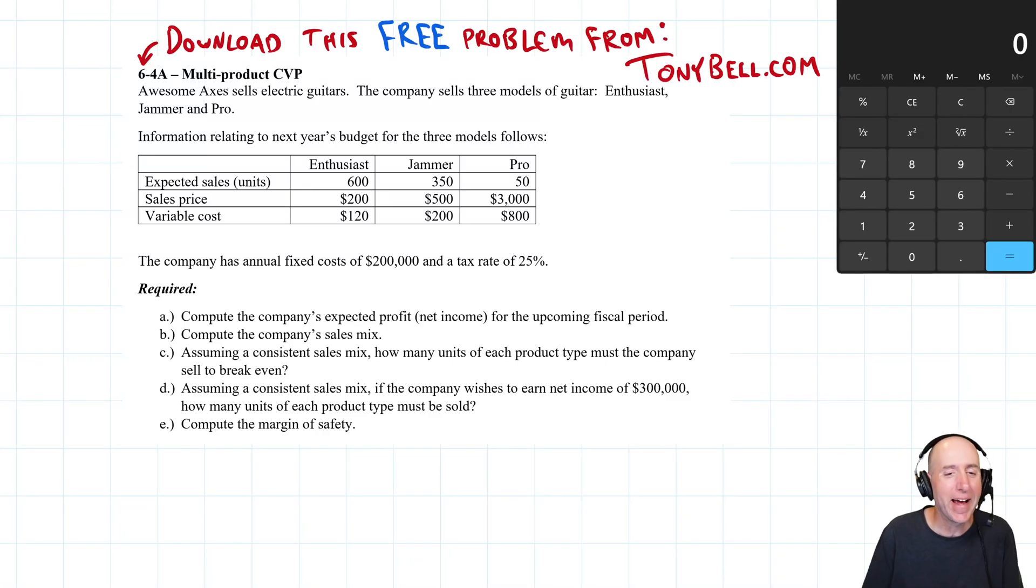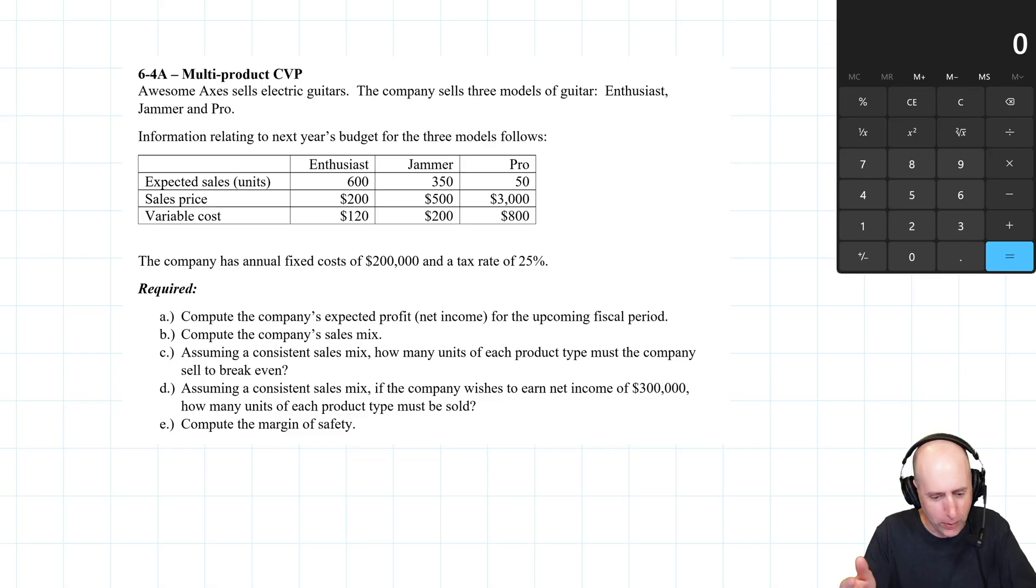Let's take a run through problem six for a multi-product CVP. It takes that break-even analysis we've been learning all chapter and adds an extra quirk - what happens when the company sells a bunch of different products? How do I get a break-even point? Well, we're about to find out. Awesome Axes sells electric guitars. The company sells three models of guitar: the Enthusiast, the Jammer, and the Pro. Information related to next year's budget for all three models follows - there's our sales and units, sales price, variable cost.